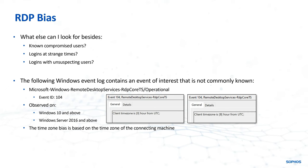What this event shows you is the time zone bias from UTC of the connecting machine. That's really important because it can help you identify suspicious RDP connections based on the time zone of that RDP connection.